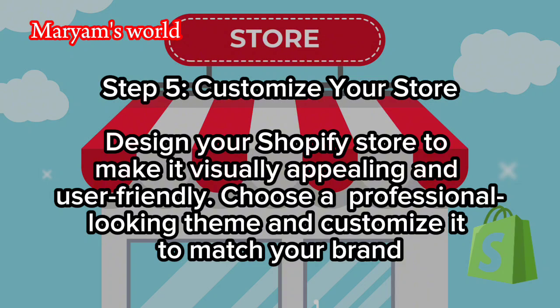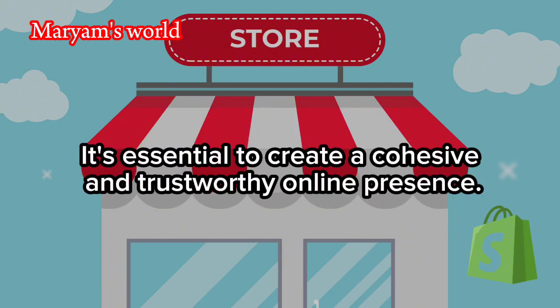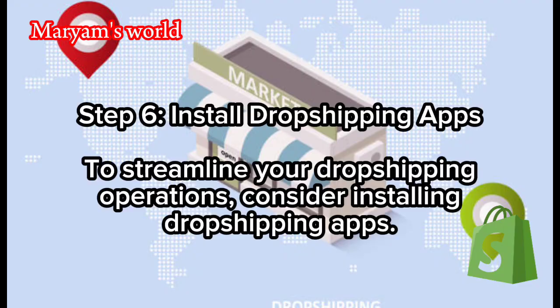Step 5: Customize your store. Design your Shopify store to make it visually appealing and user-friendly. Choose a professional-looking theme and customize it to match your brand. Create a compelling logo, write product descriptions, and set up the necessary pages such as About Us, Contact, and Shipping Information. It's essential to create a cohesive and trustworthy online presence.